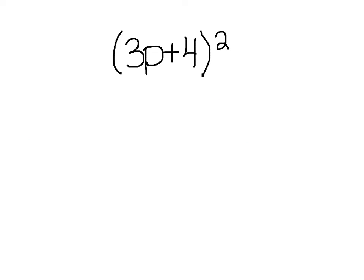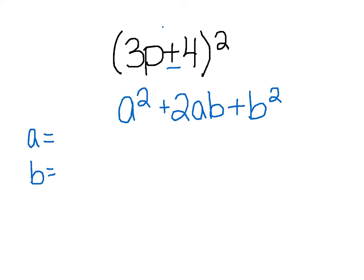Looking at a harder example, we have 3p plus 4 squared. Again, because it's a plus sign, we're going to be using the formula a squared plus 2ab plus b squared. But now when we look at what is a and what is b, we have to be very careful. Because our a now is 3p, and our b is 4.